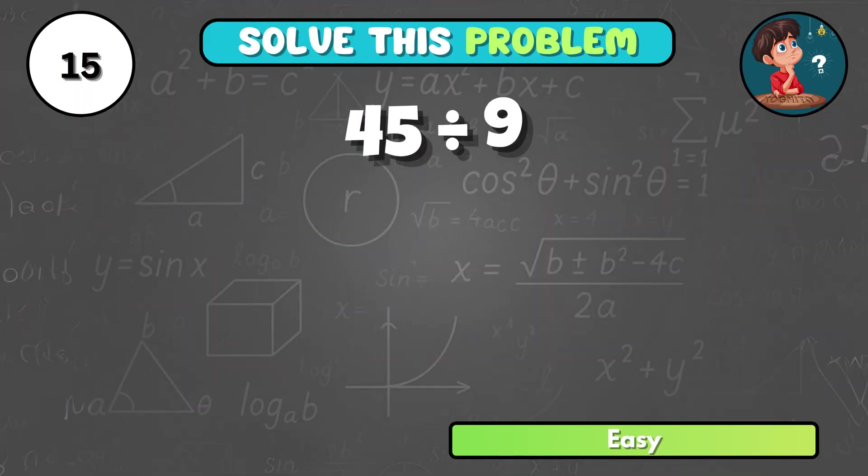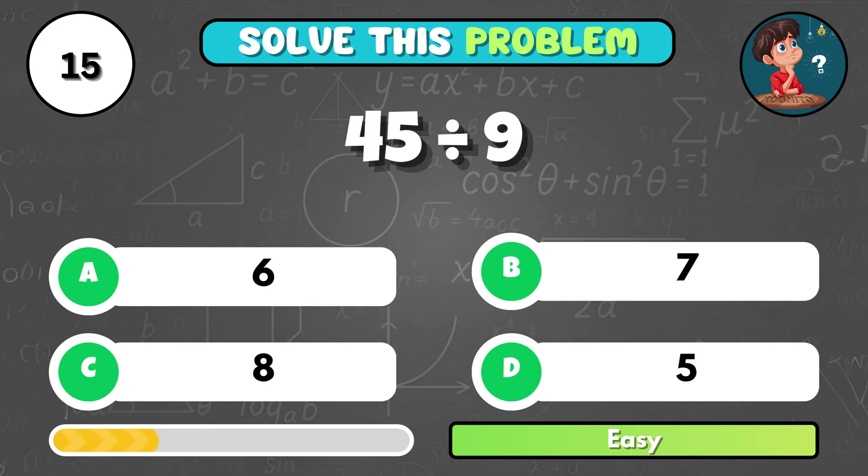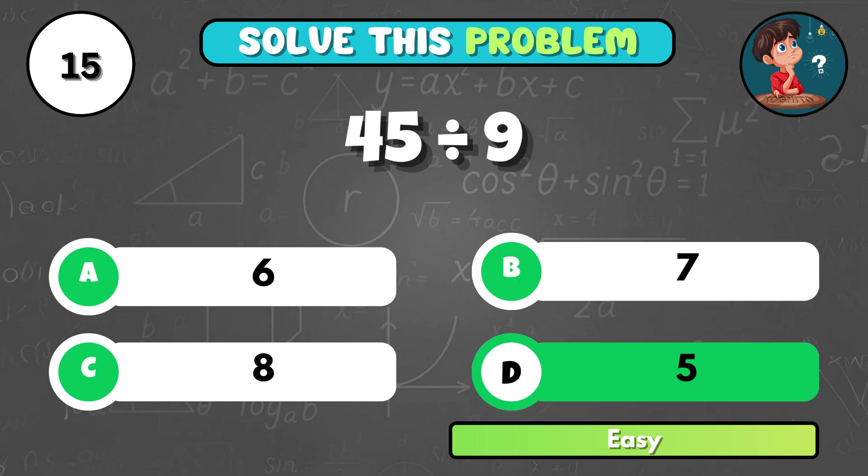What number do you get if you divide 45 by 9? That comes to D, 5.